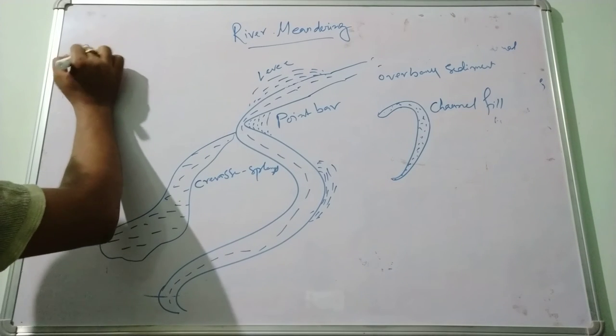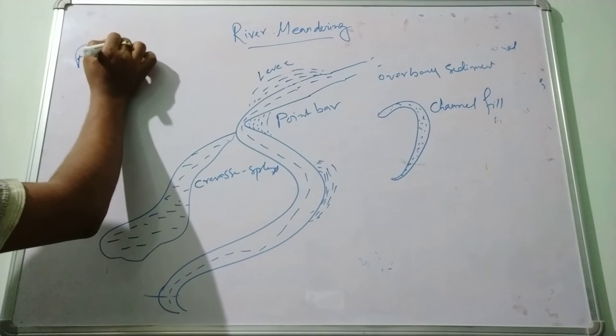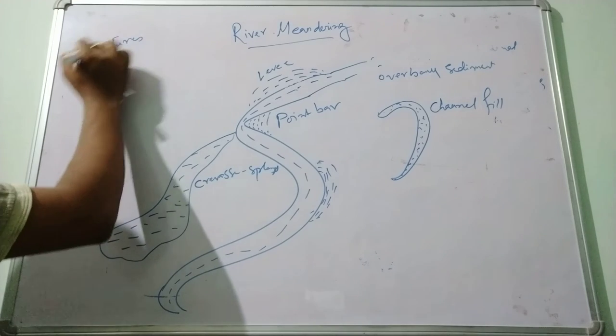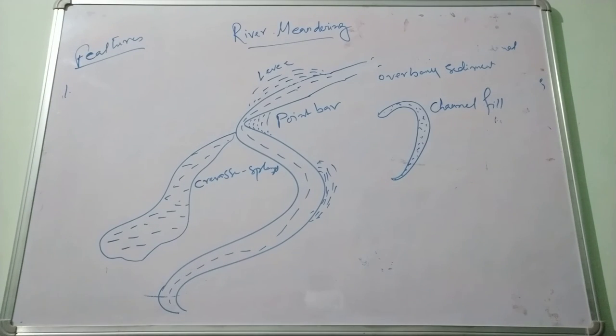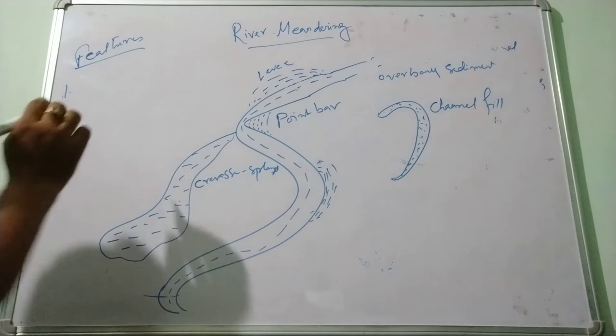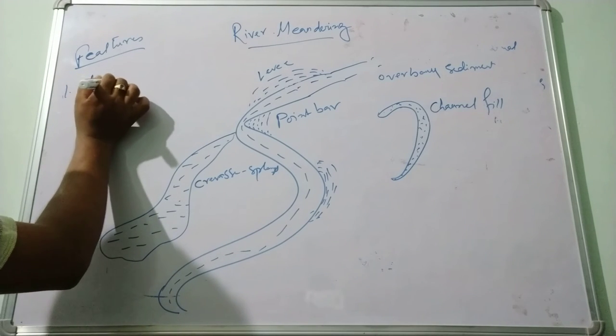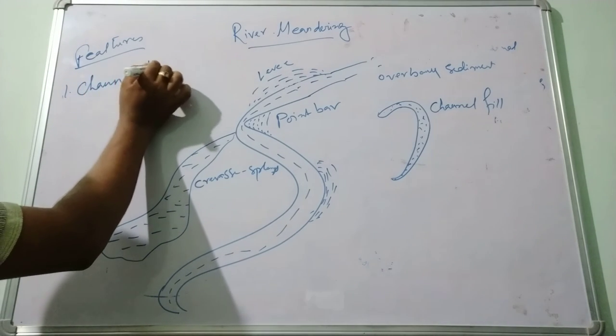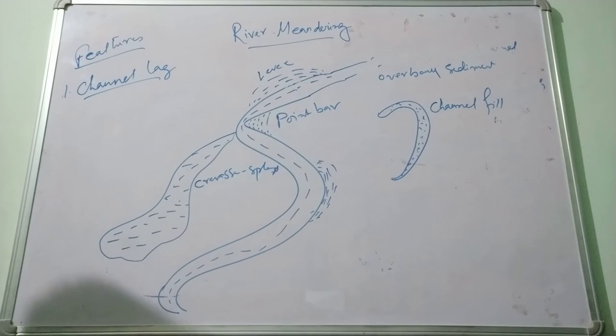Now the features that have been found on the meandering belt. First is the channel lag. This channel lag is below the common floor of the coarsest material. It is sorted out and left behind on the stream bed.